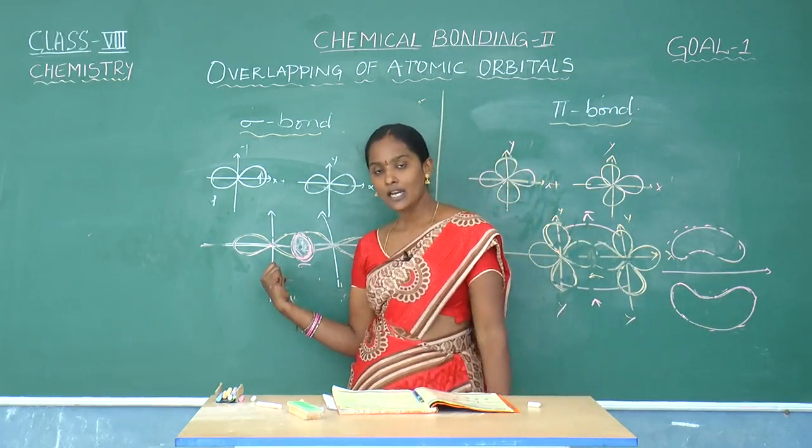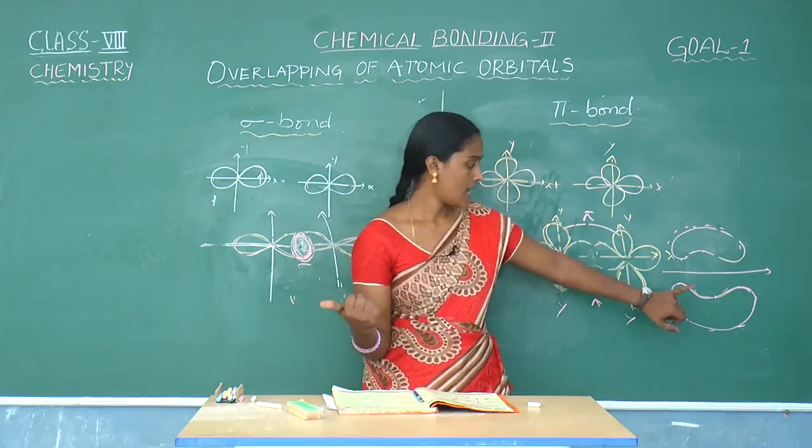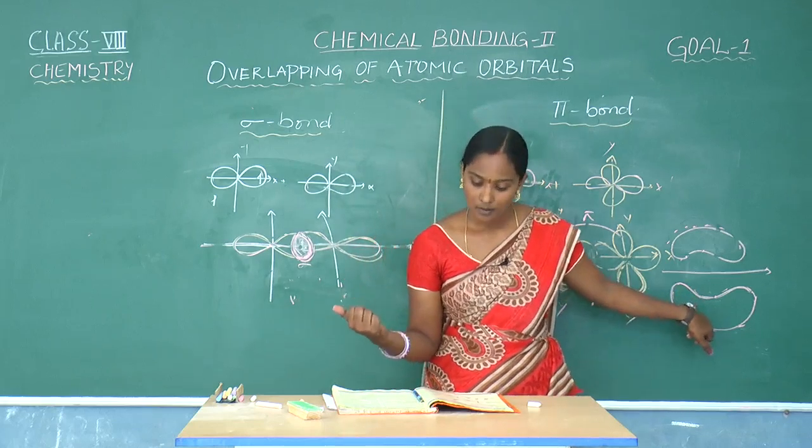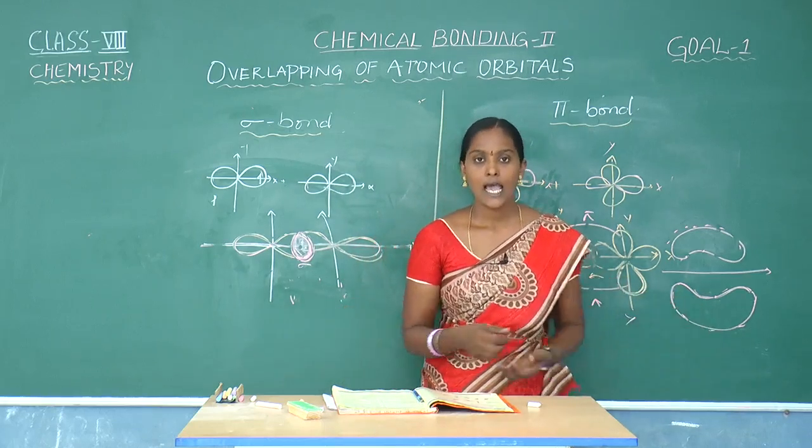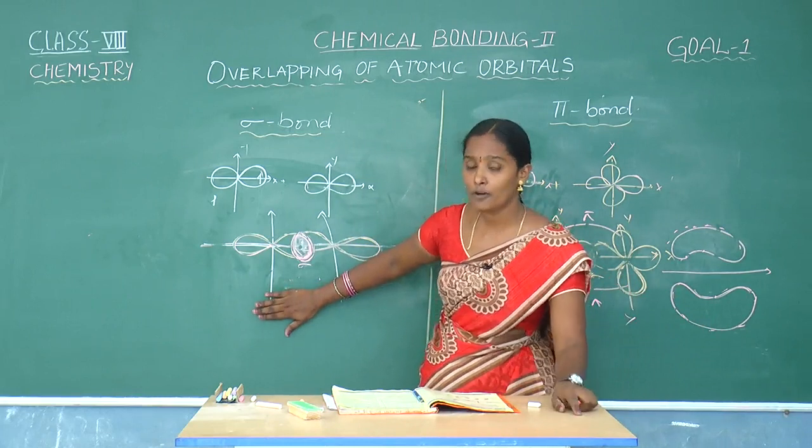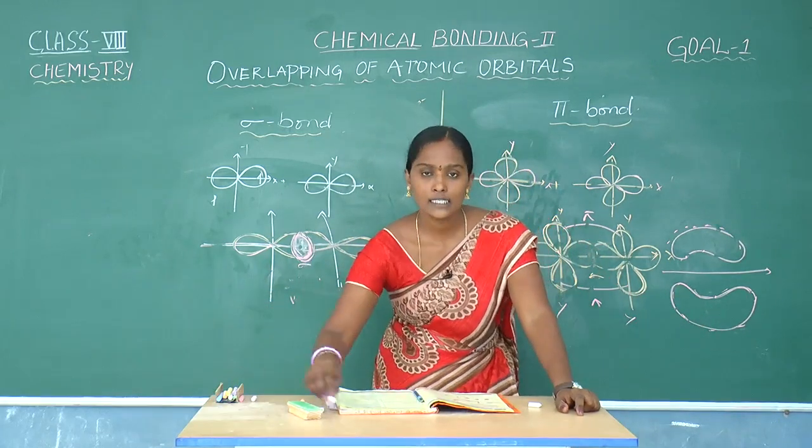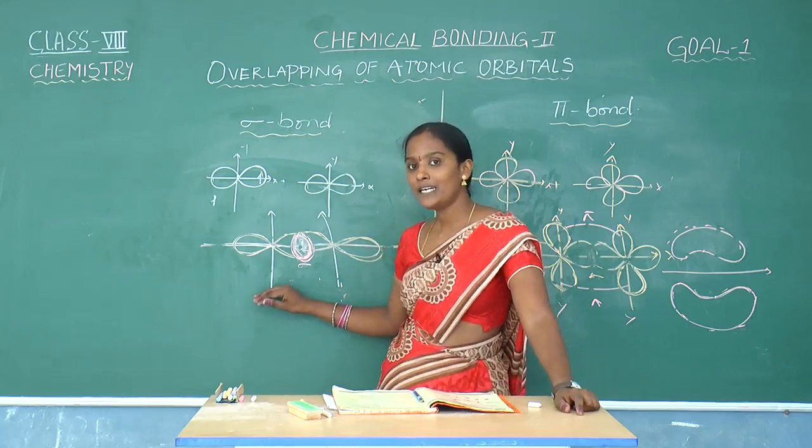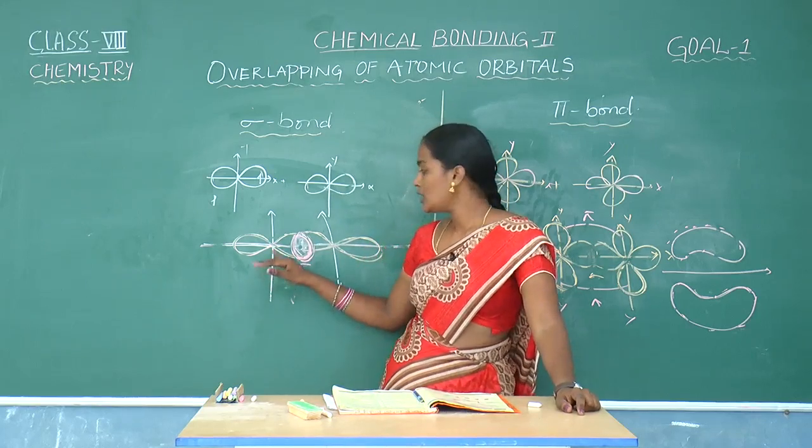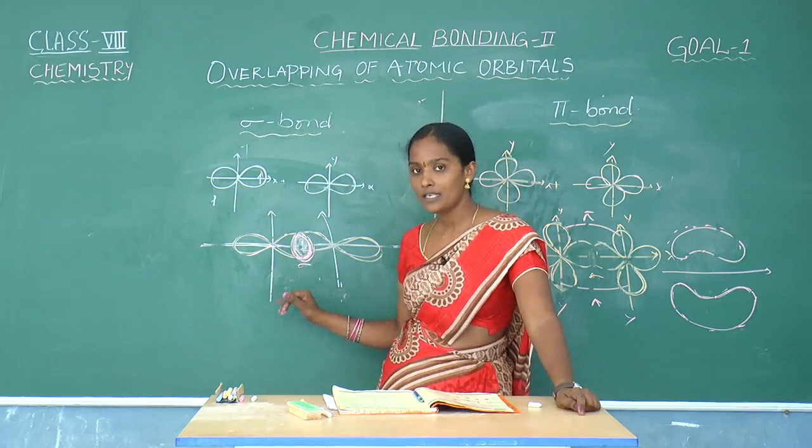Sigma bond electrons are localized electrons and pi bond electrons are mobile electrons. Without any formation of pi bond, sigma bond will be formed. So we can say this is having independent existence because there is end to end overlapping.